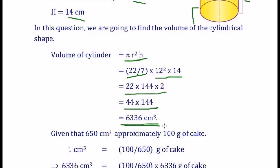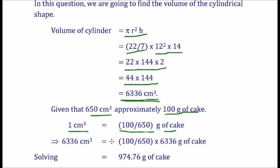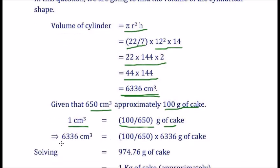Given that 650 cm cube is approximately 100 grams of cake. That implies 1 cm cube is equal to 100/650 gram of cake. So, we want 6,336 cm cube of cake. That is 6,336 cm cube is equal to 100 divided by 650 × 6,336 gram of cake.